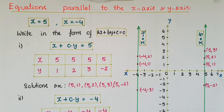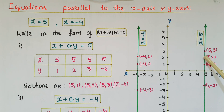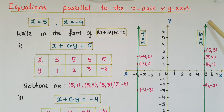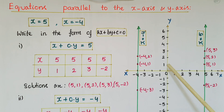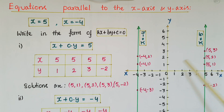Now mark these points on the graph: (5,1), (5,2), (5,3), and (5,-2). If you join all these points you get a line — this is x = 5. Observe that this line is parallel to the y-axis, at a distance of 5 units to the right side of the y-axis.